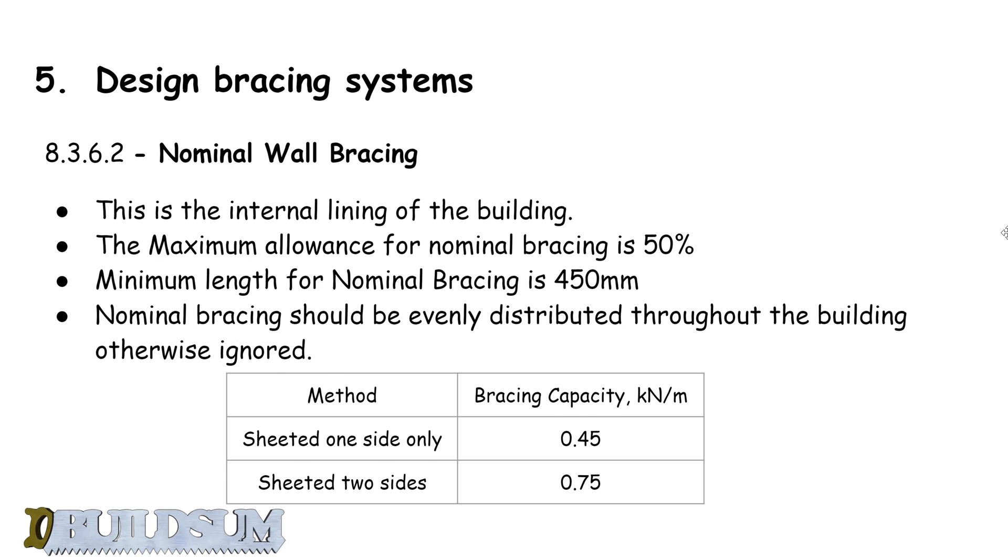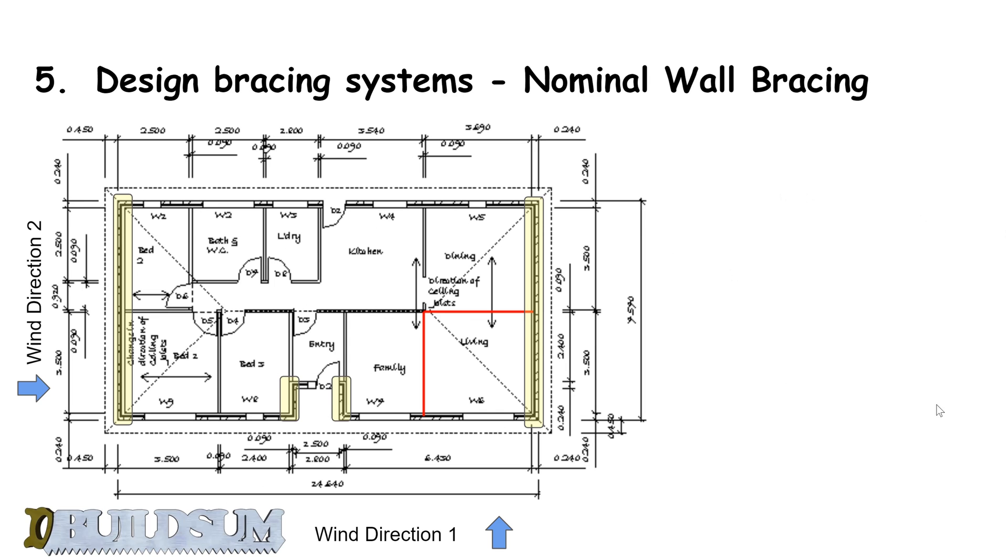Let's do that with our example house. Wind direction one is down the bottom here—the wind's blowing against the long side of the house. So all the walls at 90 degrees to the wind direction will be resisting that. The wind will blow against this wall, and these walls will help resist the load.